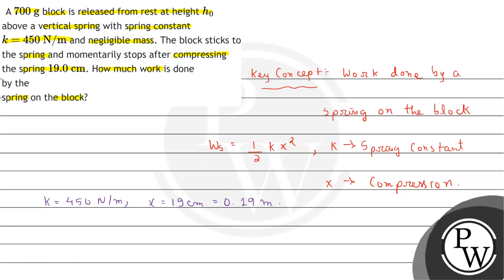Now using the above formula, we can write the work done by the spring on the block as W equals half multiplied by 450 multiplied by 0.19 whole squared.